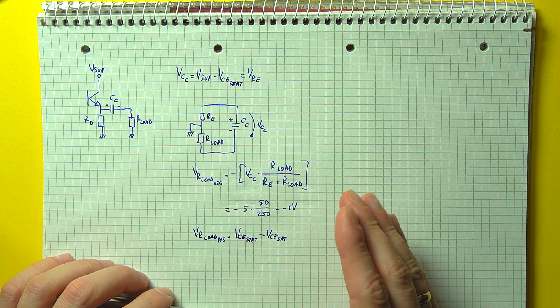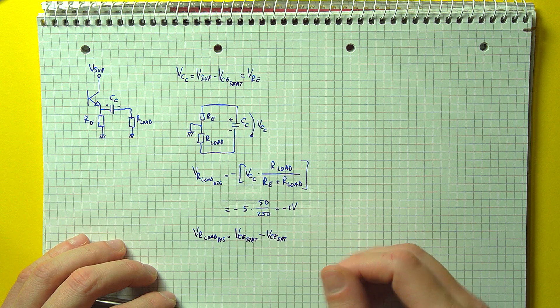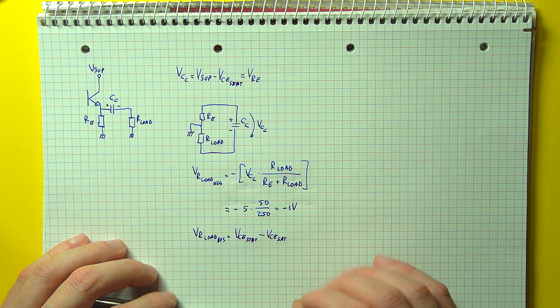Well, first, let's look at the maximum positive voltage swing. This will be equal to the static collector emitter voltage minus the saturation collector emitter voltage.